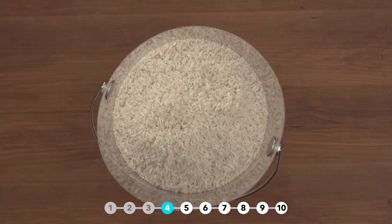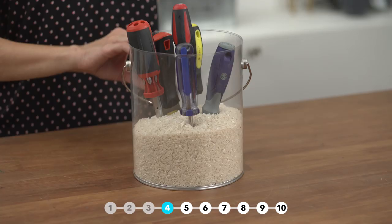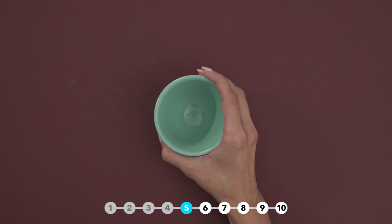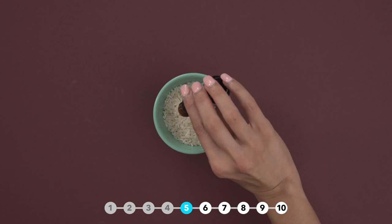Store metal tools in rice to prevent rusting. Fill a small container with uncooked rice and a few drops of essential oils to absorb the moisture and freshen the air. Place in a closet to prevent musty odors.